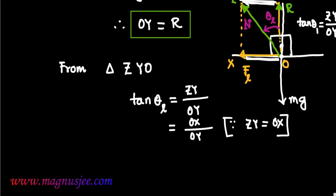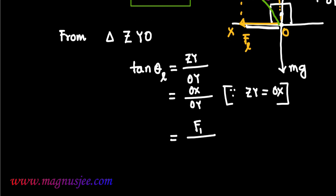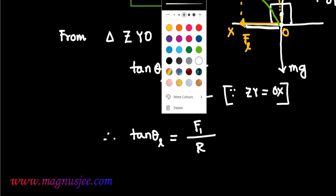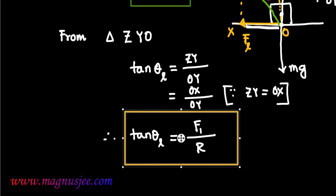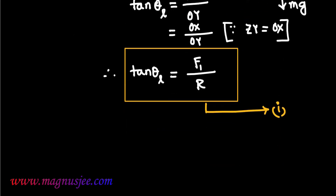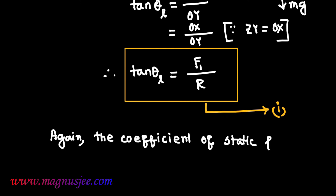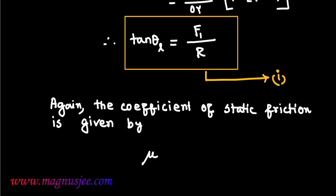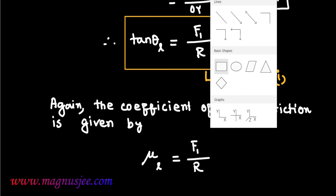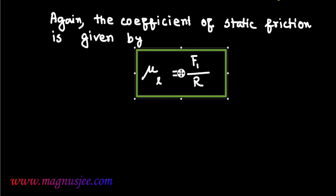Putting the values: OX equals FL and OY equals R, so finally we get tan theta L equals FL divided by R. The tangent of the angle of friction is the ratio of limiting friction FL to normal reaction R — this is Equation 1. Again, the coefficient of static friction mu S or mu L equals FL divided by R; this is Equation 2.